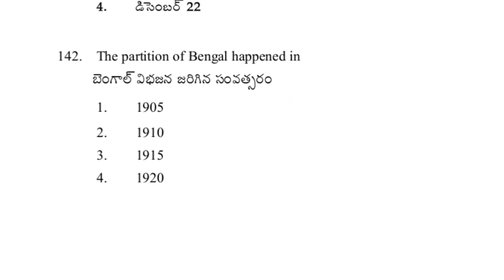Bengal was divided. The partition of Bengal happened in option 1 — 1905.